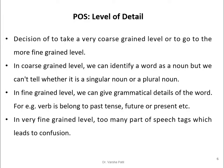At the coarse-grained level, we can identify a word as a noun but cannot tell whether it's singular or plural — our scope is only to identify it as a noun, not its detailed category. At the fine-grained level, we can give grammatical details of the word, for example whether a verb belongs to past, future, or present tense, or whether it is used with a third-person singular or non-singular subject.